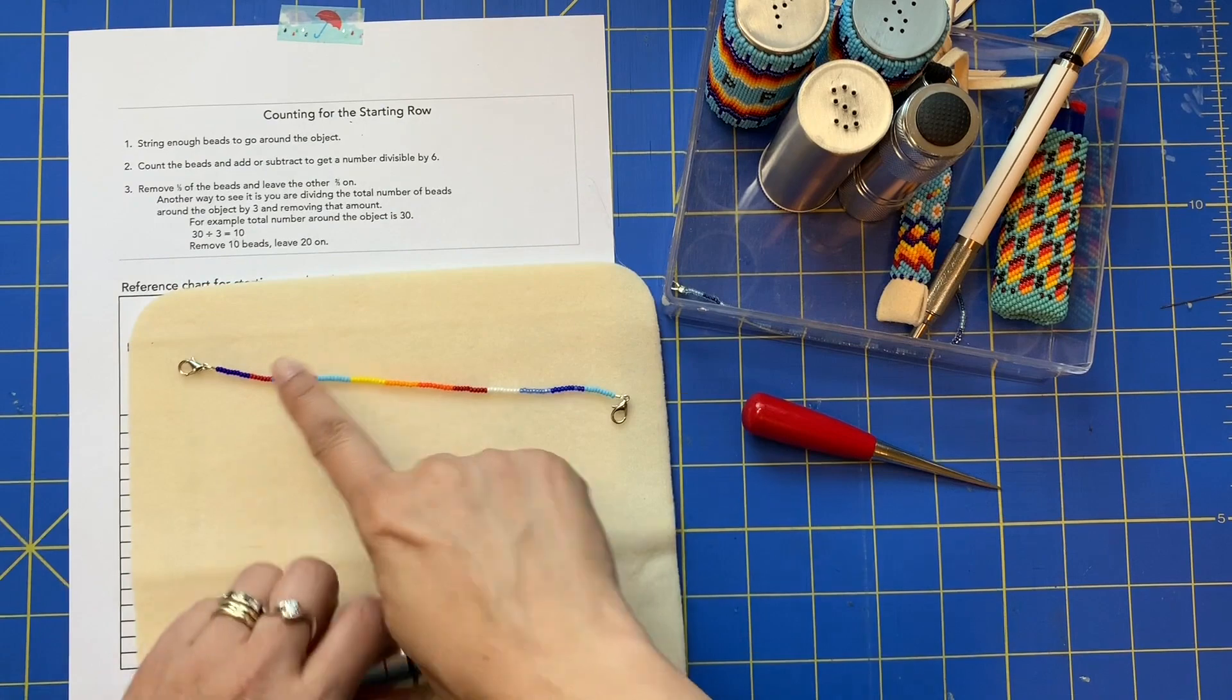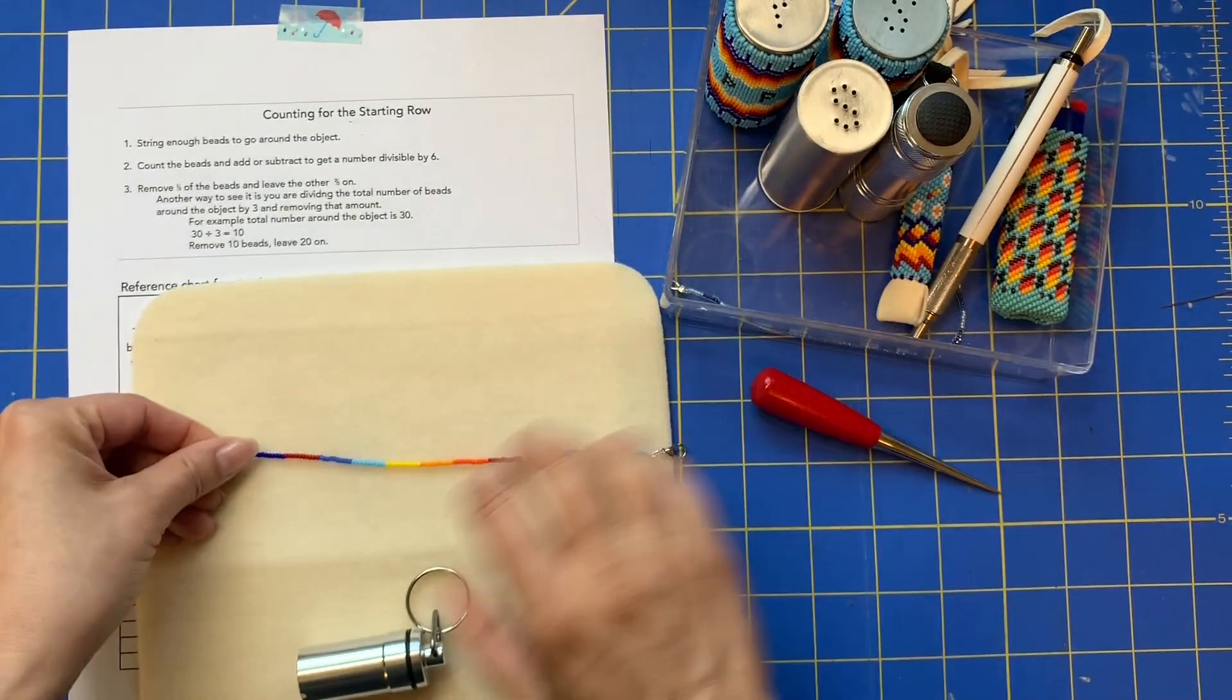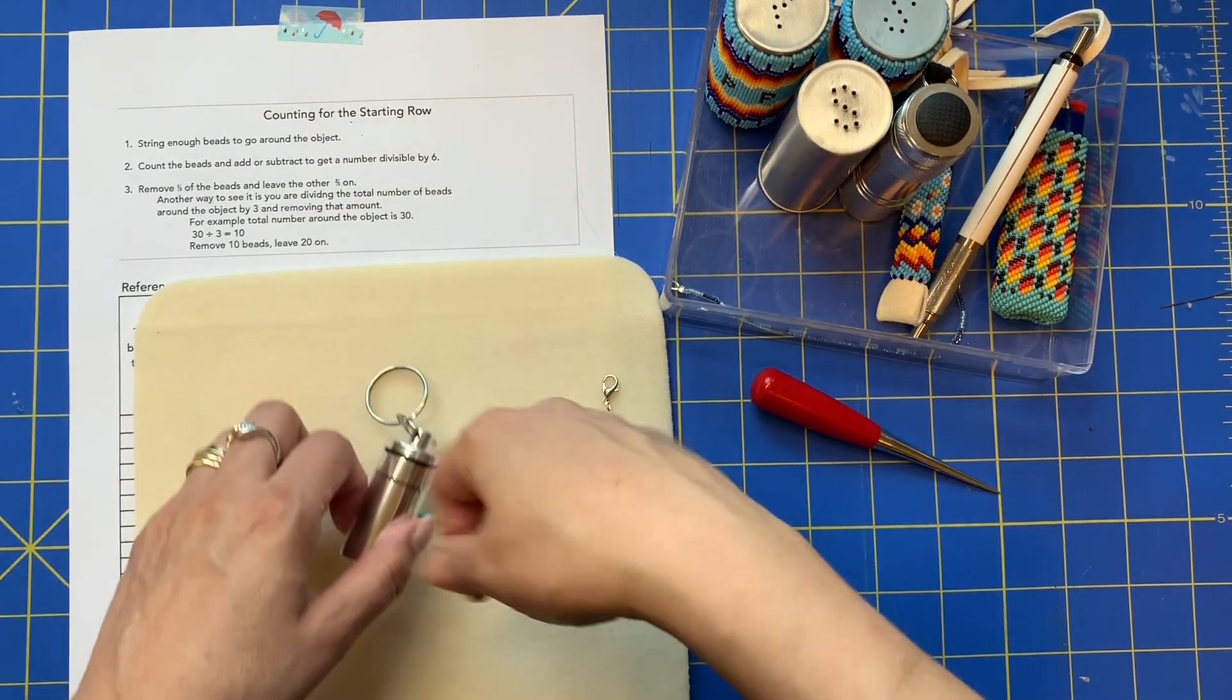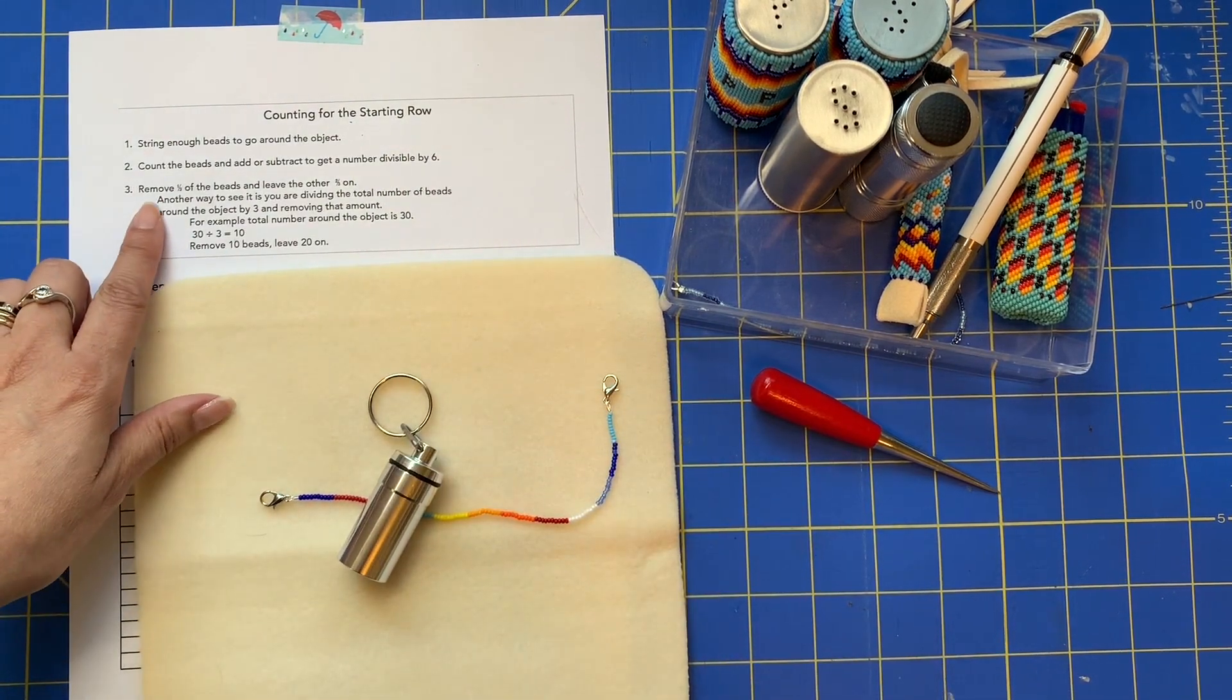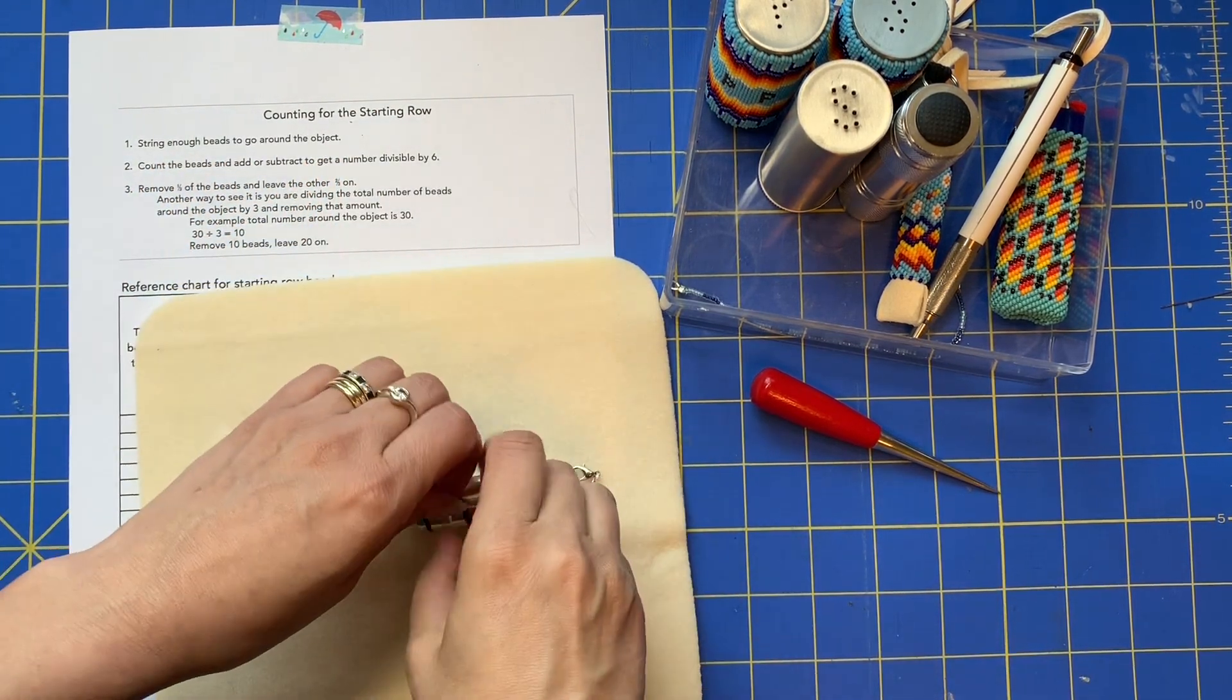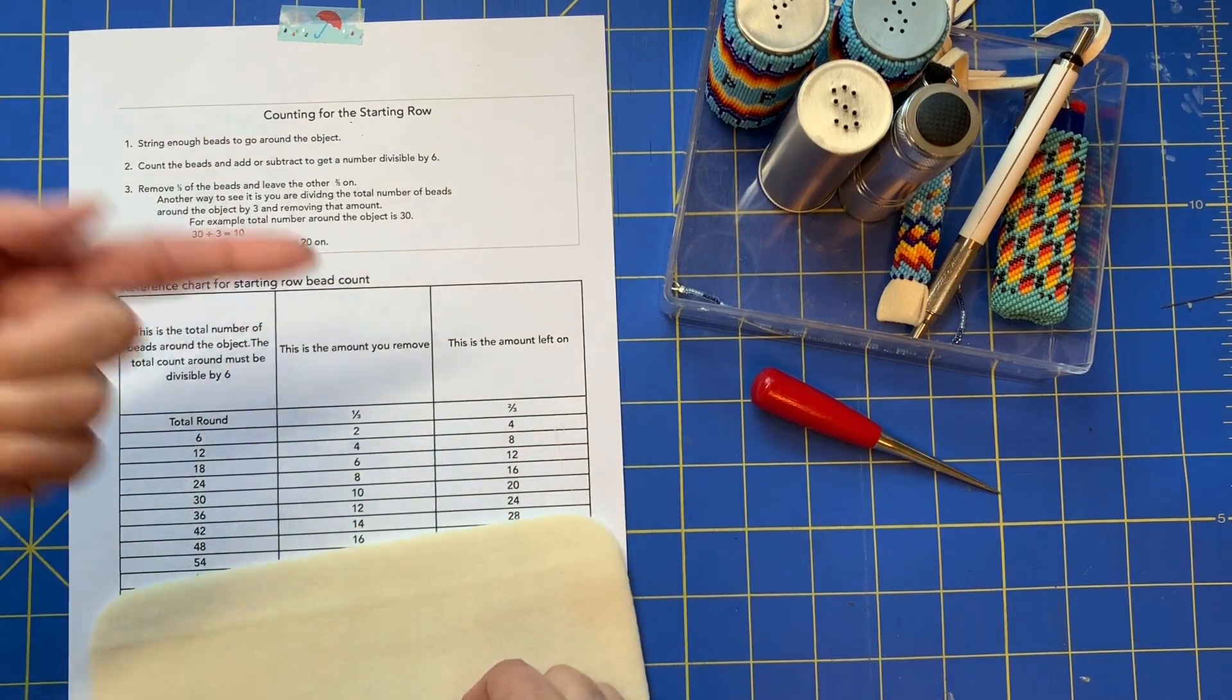So this is a little bead ruler I made. I just strung up beads in groups of 10 and I put little lobster tails on the end for handles, and it just makes it easy to do a count. So in this step of string enough beads to go around the object, you actually can skip that a little bit because you measure it by this and then reference this, and so you really only have to string on your amount you leave on and then you can start beading.